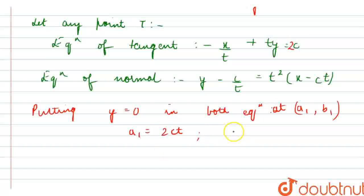And what would be the equation of normal? It would be a2 is equal to ct minus c upon t cube. This is when we put y equal to 0. Now, we are putting x equal to 0. So, if x is equal to 0, the equation of tangent would be b1 is equal to 2c upon t. And equation of normal would be b2 is equal to c upon t minus ct cube.